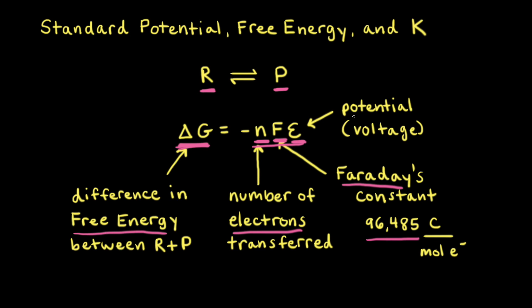E refers to the potential of the redox reaction — you could also call this the voltage. If the reactants and products are both in their standard states, we add the superscript 'not' to ΔG and E, giving us ΔG° = −nFE°. We can use this equation to calculate ΔG° from E°, or vice versa.